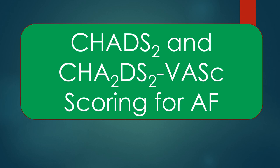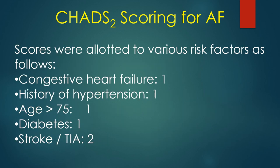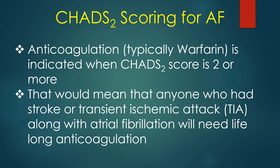CHADS2 score was developed to assess the risk of thromboembolism in non-valvar atrial fibrillation. Scores are allotted as follows: congestive heart failure 1, history of hypertension 1, age above 75 years 1, diabetes 1, stroke or TIA 2. Anticoagulation — typically warfarin — is indicated when the CHADS2 score is 2 or more.